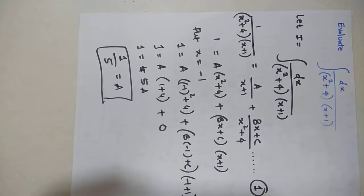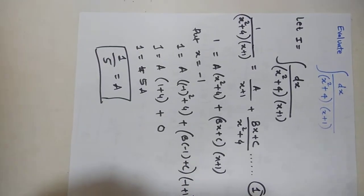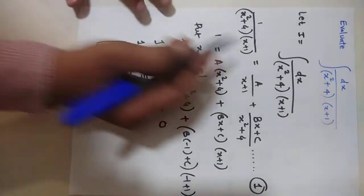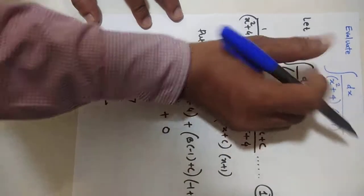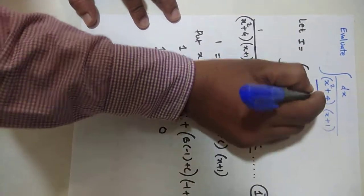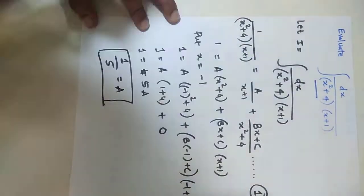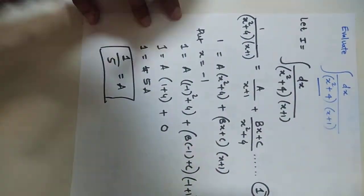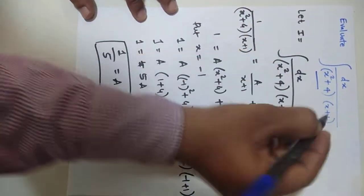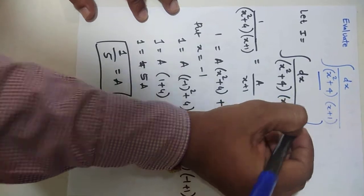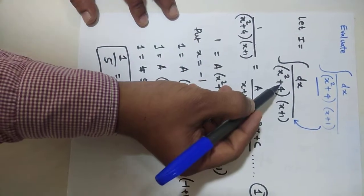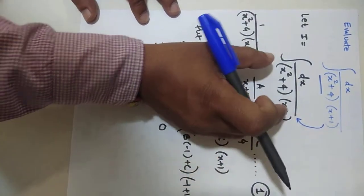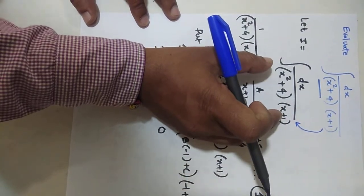Hello friends, today's topic is integration. We need to evaluate the integral of dx divided by (x² + 4)(x + 1). Let I be equal to this integral. As you can see, the denominator has two brackets.